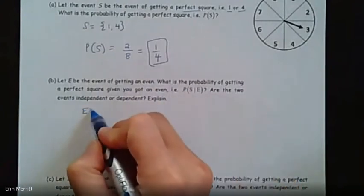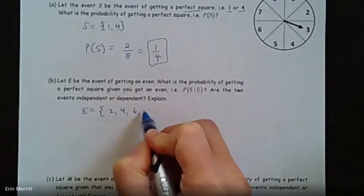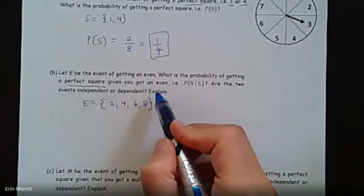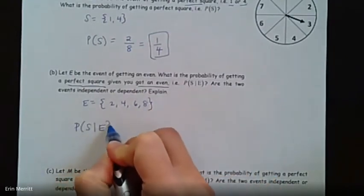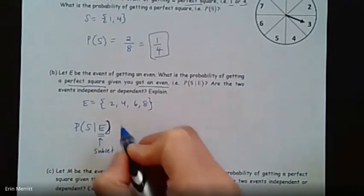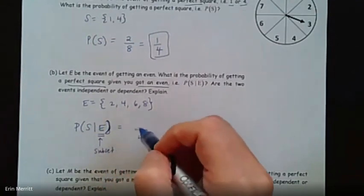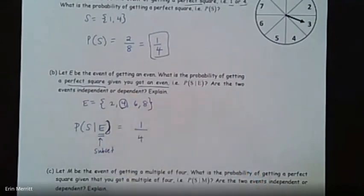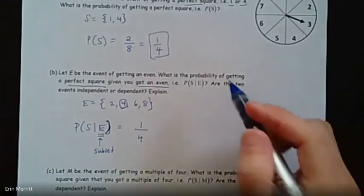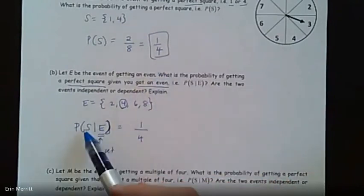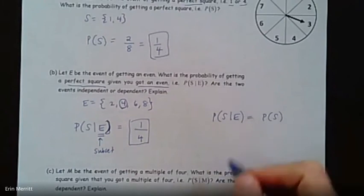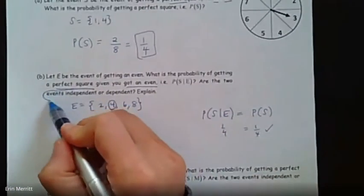Let E be the event of getting an even number. What's the probability of getting a perfect square given that it's even? Being in the even set is your subset — there are four even numbers. Only one of them is a perfect square, so it would be one out of four. Are the two events independent or dependent? The probability of getting a perfect square on the whole board was one-fourth. The probability of getting a perfect square given that you're even is also one-fourth. Since P(S|E) = P(S) — both equal one-fourth — they are actually independent events.